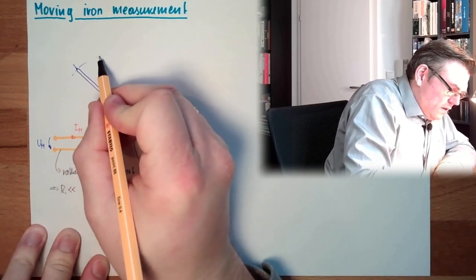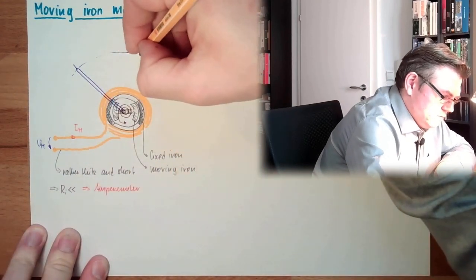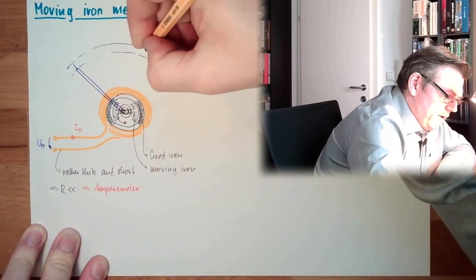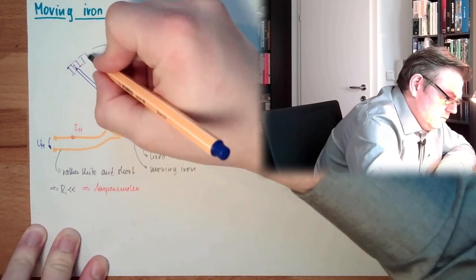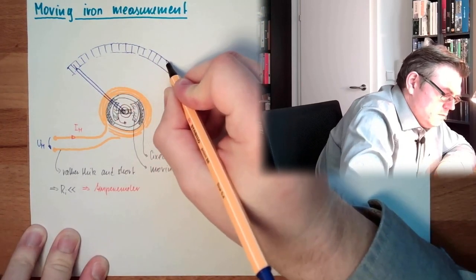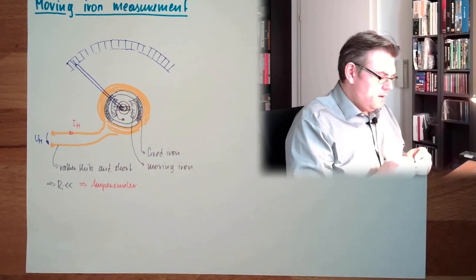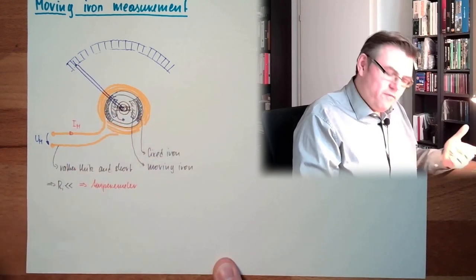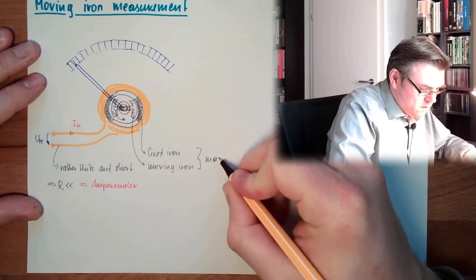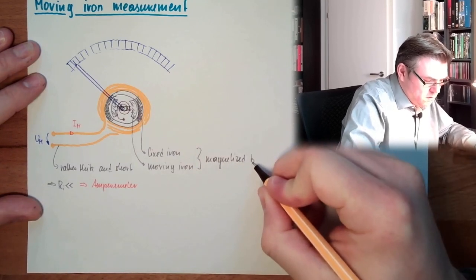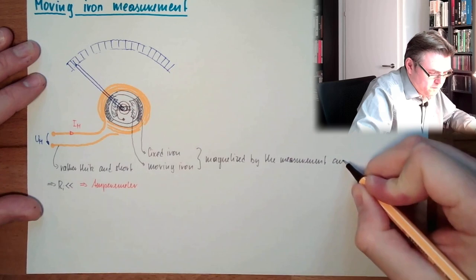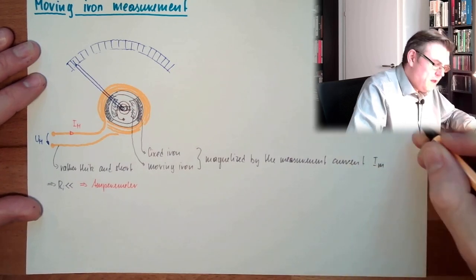And there is the pointer pointing to somewhere, and here I have a scale. Of course I have a scale, and of course the pointer is moving. Now let's discuss why the pointer is moving. Here we have the scale. Those two parts, they are ferromagnetic material, iron. These are magnetized.